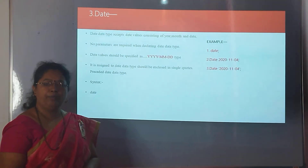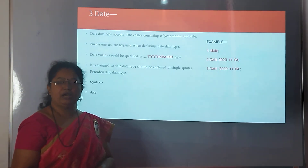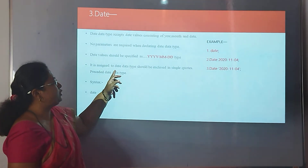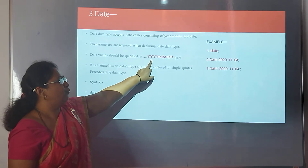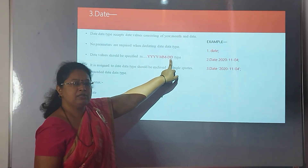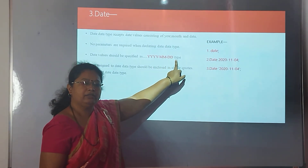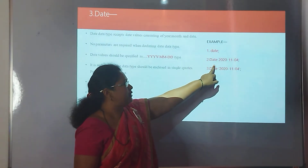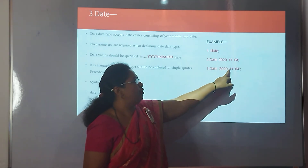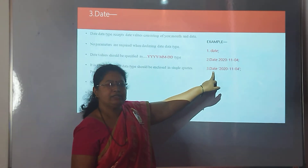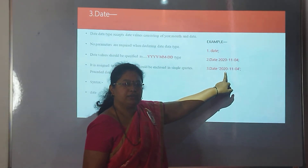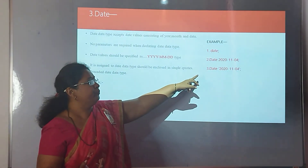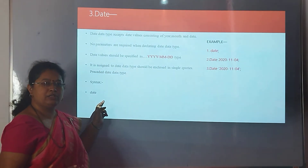The third main data type is DATE. The DATE data type is used to store or access the current system date into a relational database management system. Data is stored in the format YYYY-MM-DD, meaning year, month, and date. The syntax keyword is DATE. The example is: DATE 'your current system date'. The current date is stored and retrieved using the DATE data type in the RDBMS.